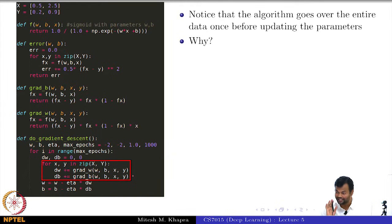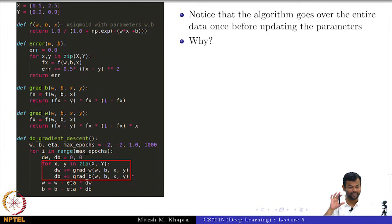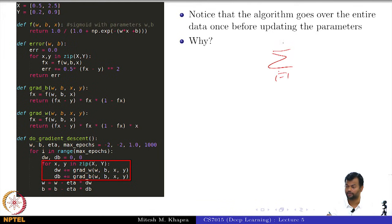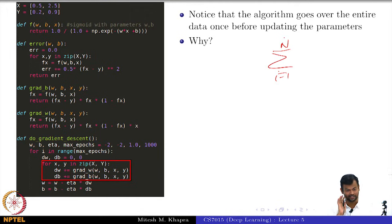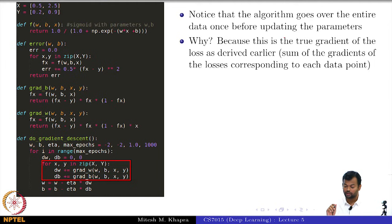Why? Because that is the right thing to do. This was the exact formula we derived — the gradient with respect to the loss function had a summation from i equal to 1 to n, and the true derivative was a sum of the derivatives with respect to all the data points. That is what we analytically derived, and hence we do that. It is not an approximation.